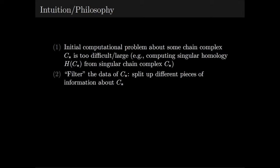What you can do is first filter the data of C star. Intuitively this just means splitting it up into different layers of information about the original chain complex. Then you use this filtration to define a related algebraic object called the associated graded of C star, denoted gr of C star.